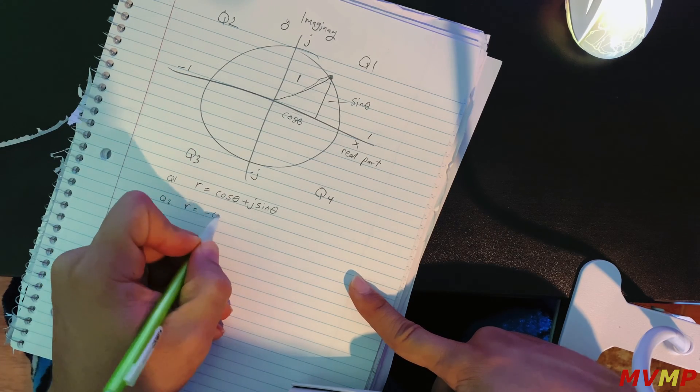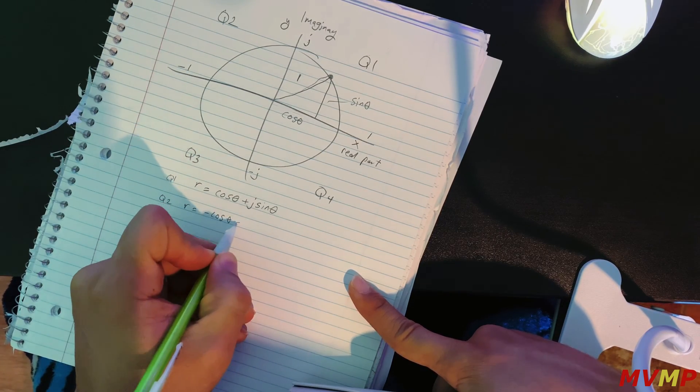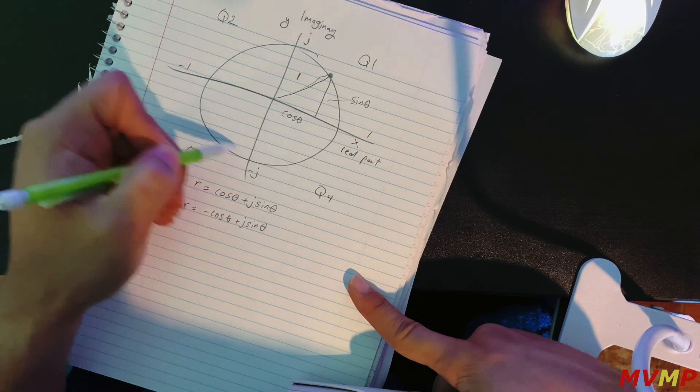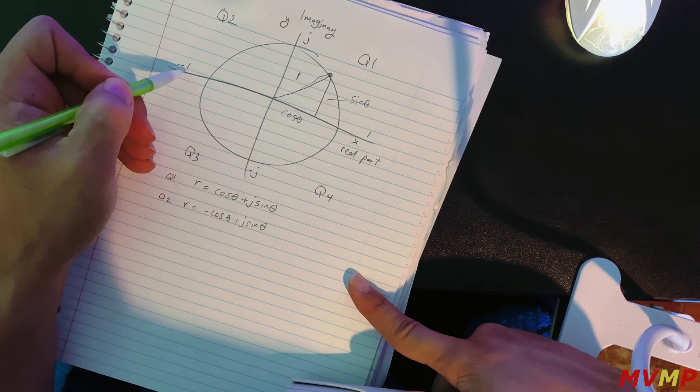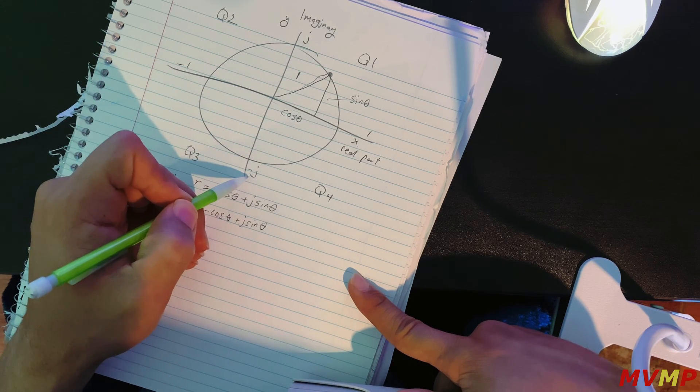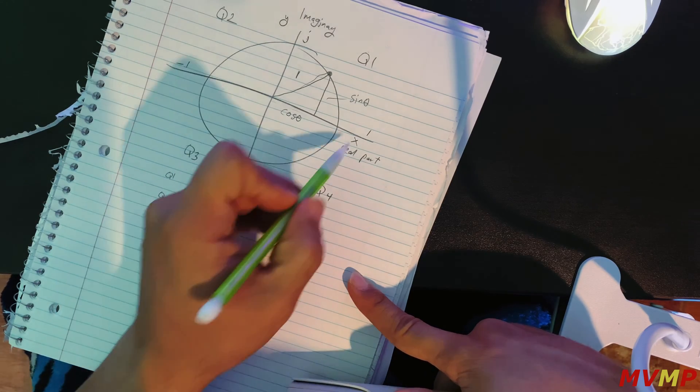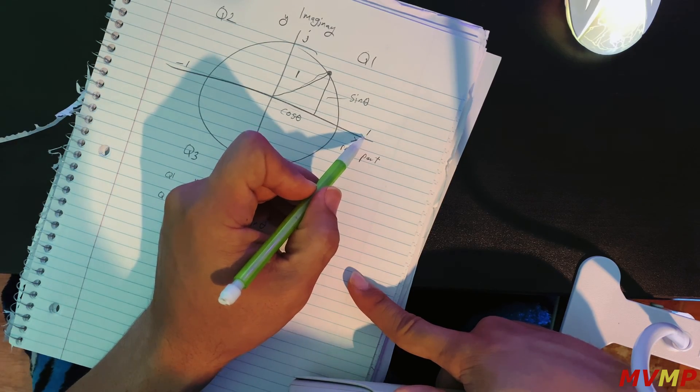So that's how you know that the real part, and if you keep going on in quadrant three you have a negative real and a negative imaginary. Quadrant four you have a negative imaginary and a real positive.